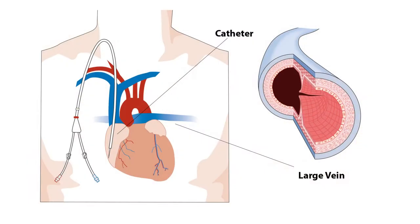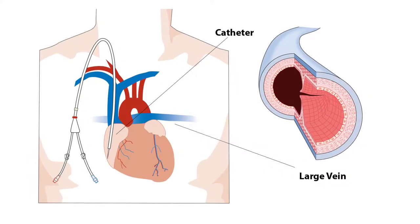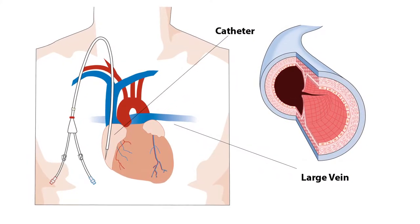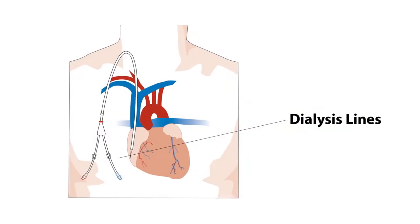Hemodialysis is a process where the machine cleans our blood artificially of poisons and replenishes some of the salts that we need. In order to do hemodialysis, we need access to a large vein in the body. There are natural veins in the neck and groin that radiologists or surgeons can create access insertions into — so-called dialysis lines.